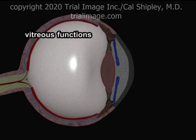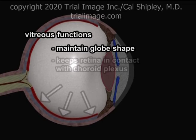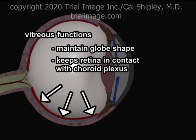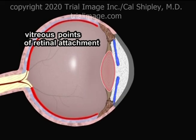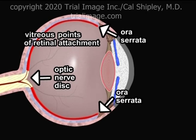Like the aqueous humor in the anterior chamber of the eye, the vitreous serves to maintain the shape of the globe by exerting outward pressure. This pressure helps to keep the retina in close contact with the choroid plexus, which supplies the retina with oxygen and nutrients from the bloodstream. Despite the fact that the vitreous is in contact with virtually 100% of the retina, it is only attached at the optic disc and where the retina ends anteriorly, the ora serrata.